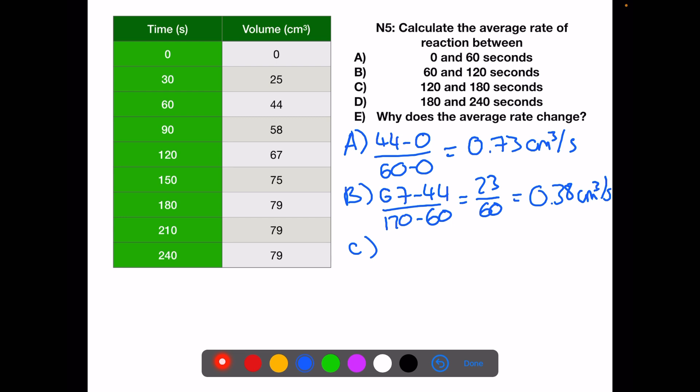For C, we will have 79 minus 67 divided by 180 minus 120. This will be 12 divided by 60, which is 0.2. For D, we will have 79 minus 79 divided by 240 minus 180. This will be 0 divided by 60, which is 0.